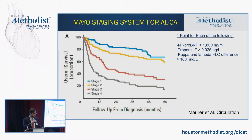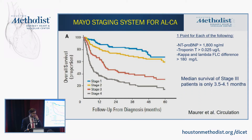The revised Mayo Clinic staging system for AL amyloid assigns one point each for NT-proBNP greater than 1,800, elevated troponin T, and a free light chain difference greater than 180. Stage 1 and 2 have reasonable survival, but stage 3 has very limited survival — about 40% at two years. This is useful for prognostication and for considering bone marrow transplant eligibility and heart transplant timing.